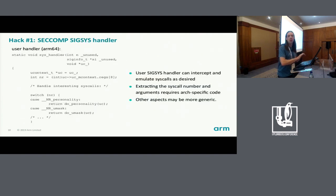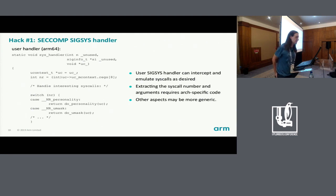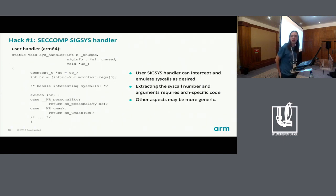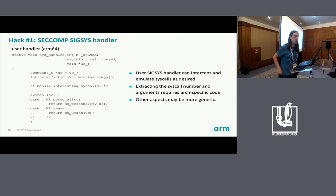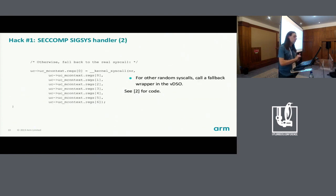When we trap a syscall out into user space, we need to handle it, and the skeleton handler might look something like this. The details of how to extract the system call number and arguments is obviously architecture-specific, but once we've extracted that information we can handle things in a generic way, much as they're handled in the kernel. We might have a switch on the syscall number to catch any system calls we want to do something special with, and then for others we fall through and call some stub. I added a stub in the VDSO which will just make a syscall using the arguments supplied. Because that comes from the VDSO now, it won't be bounced again and the system call will just be executed.